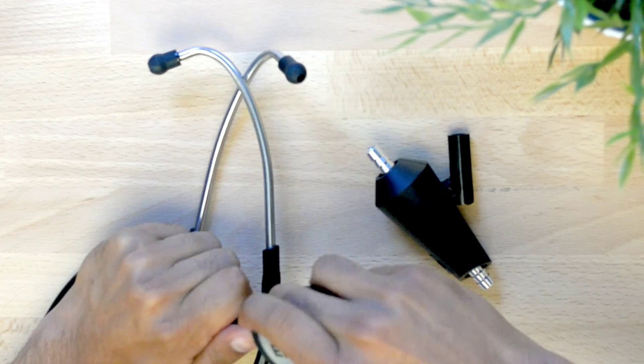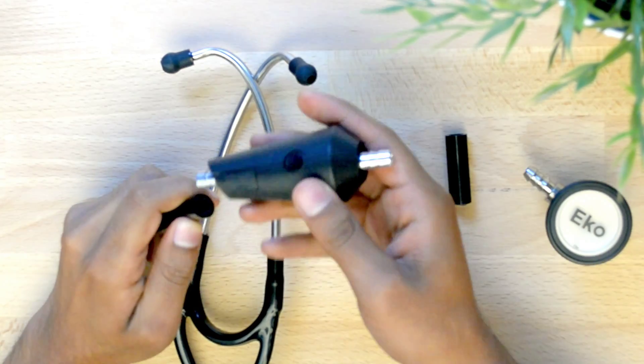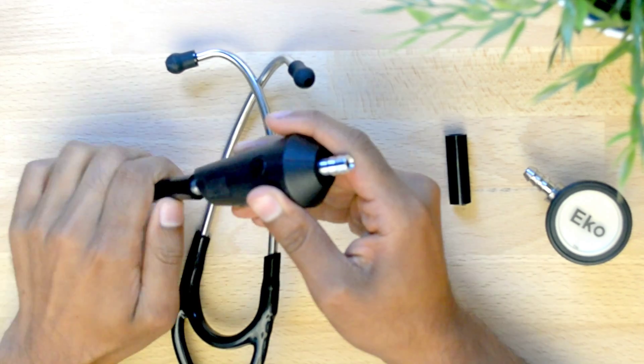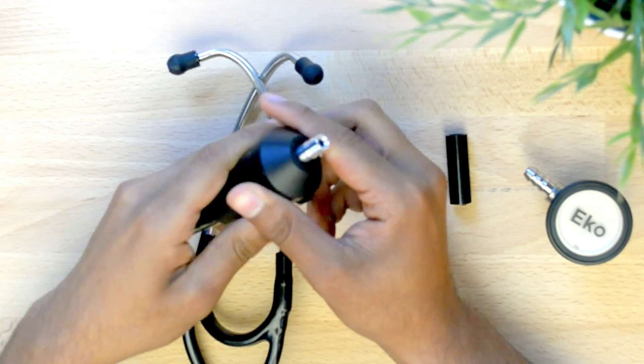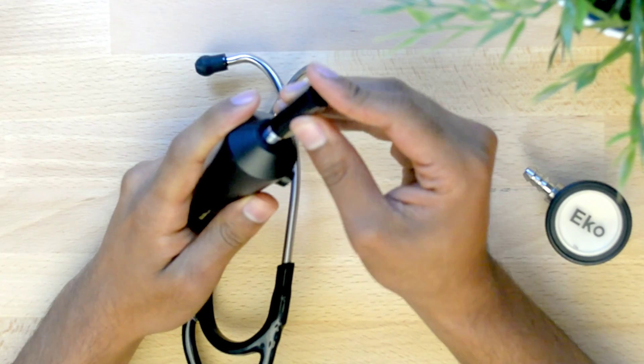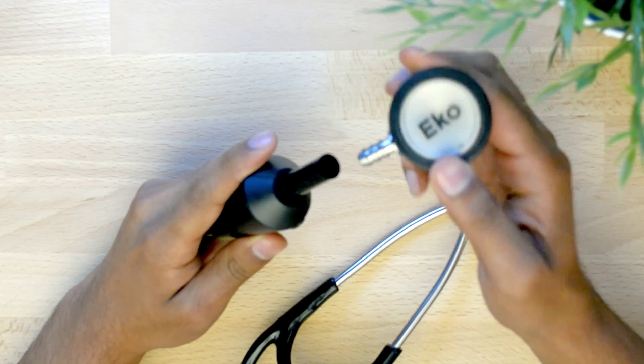First, remove the chest piece of the stethoscope. Insert the small end of the ECHO-Core hardware into the tubing of the stethoscope. Then attach the large adapter to the top of the ECHO-Core. Finally, insert the chest piece.